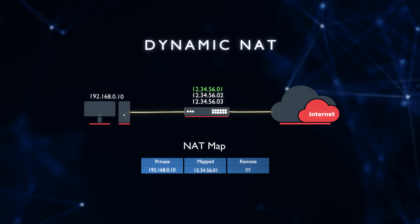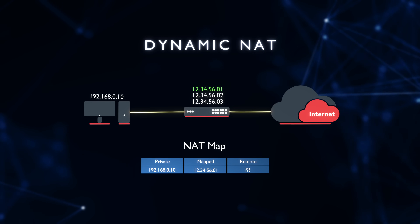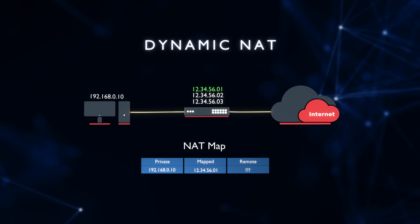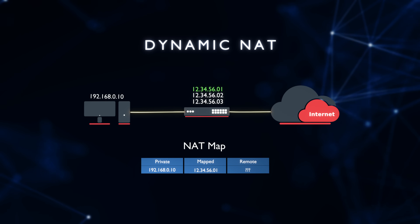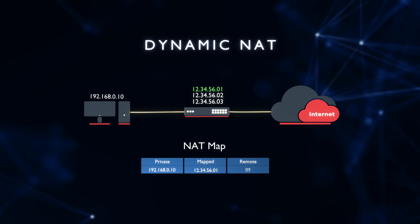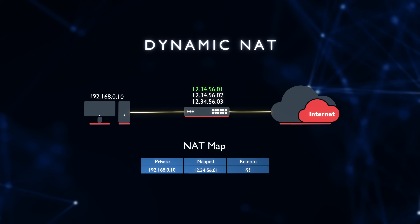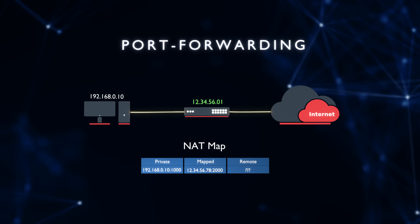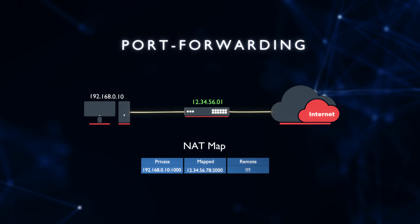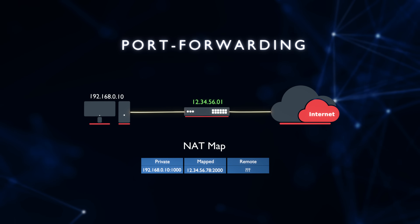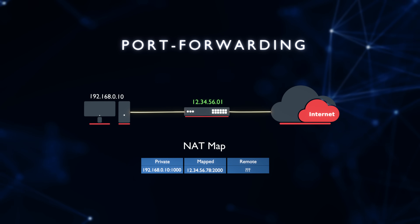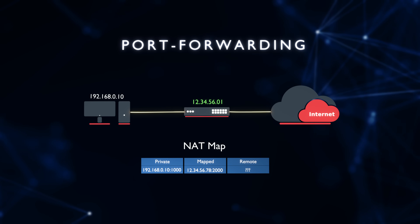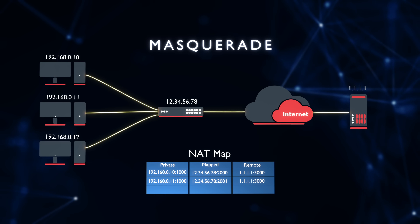Then there is dynamic NAT, where the gateway has a pool of IP addresses that it can dynamically hand out to many clients as needed — the ports and endpoints again do not matter. And then there is port forwarding, which is a cool method for exposing a single port on a LAN device as if it were an open port on your gateway. It is just one NAT map entry and it can work together with Masquerade — you already know how that works.